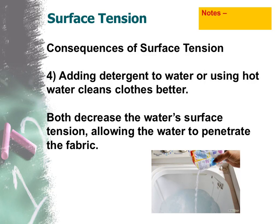Finally, a fourth consequence: you can usually clean your clothes better by adding detergent to water or by using hot water, because both of those things actually decrease the water's surface tension. That allows the water to actually penetrate the fabric. So we're actually trying to penetrate the fabric rather than trying to keep the water out — kind of like the opposite of the previous example.